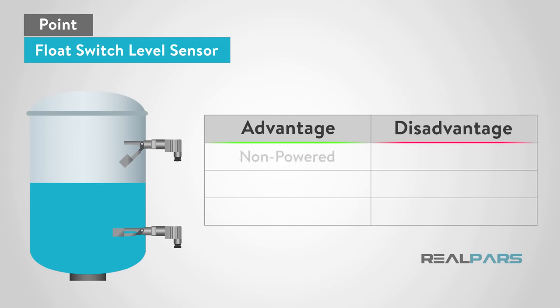The advantages of a float switch are that it is a non-powered device. It provides a direct indication and they are inexpensive.